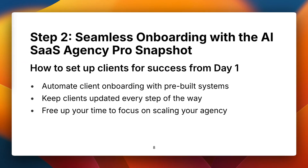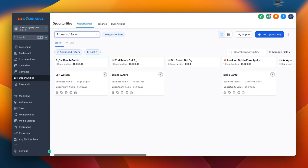Once you've attracted prospects, the next critical step is to onboard them quickly and seamlessly. This is where my AI SaaS Agency Pro snapshot comes in. This snapshot is the secret weapon — it automates everything from lead progression to onboarding, collecting client info, guiding them through setup, and includes pre-written follow-ups that keep clients informed every step of the way. Less time on manual tasks, more time growing your business.